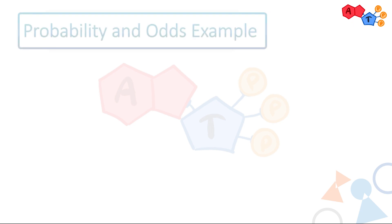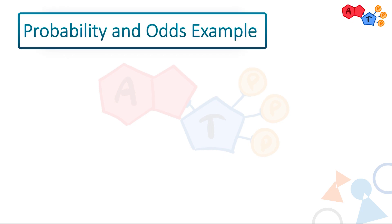With all of this, you should be able to calculate and understand the meaning of likelihood ratio. But to take it a few steps further, we need to have a quick talk about probability and odds. Let's show an example to explain each of them.